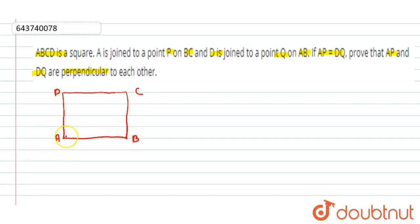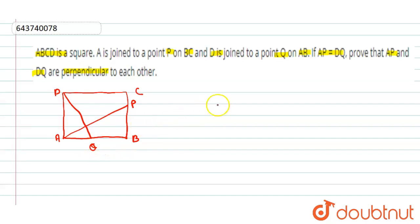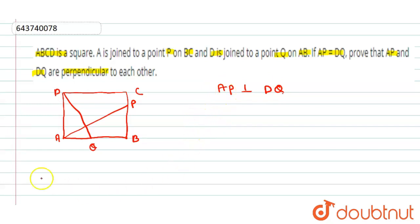A is joined to P on BC, and D is joined to Q on AB. We have to prove that AP is perpendicular to DQ. This is what we need to prove in this question.